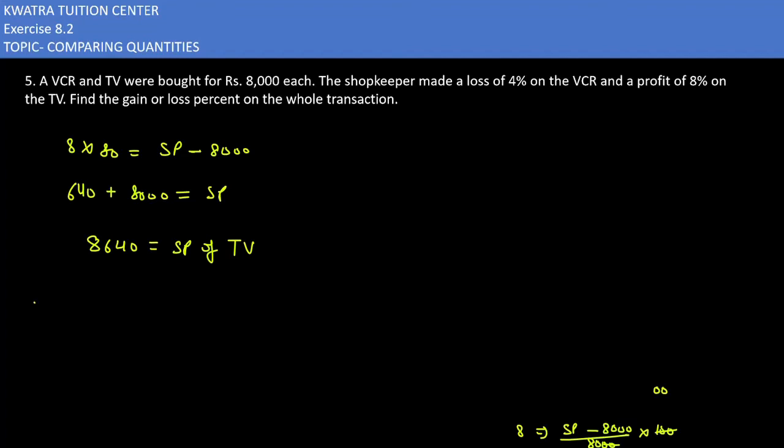Now see, cost price if we take the VCR and TV together, then we will add 8,000 and 8,000. 8,000 plus 8,000 is 16,000.